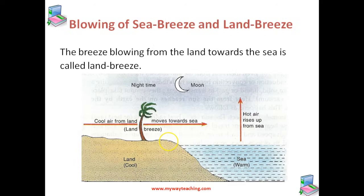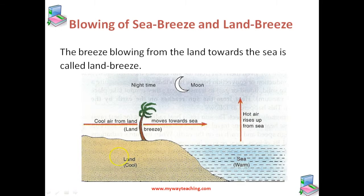Whereas during the night time, the hot land cools much faster than the sea. The sea water remains warm, and now the hot air over the sea moves upwards while the cold air from the land moves towards the sea.